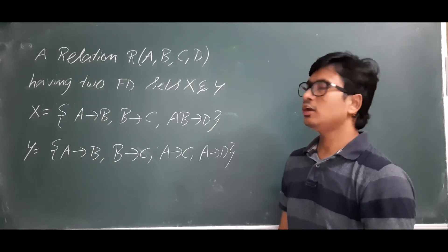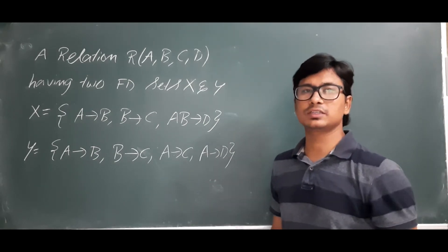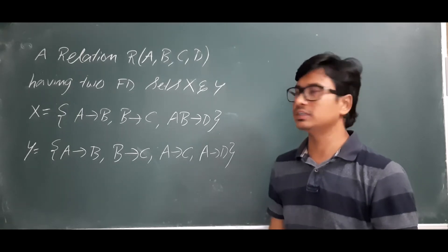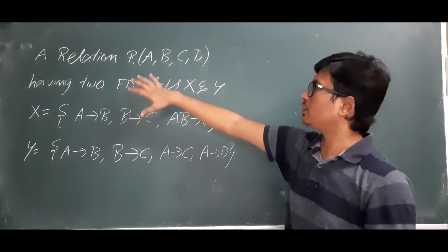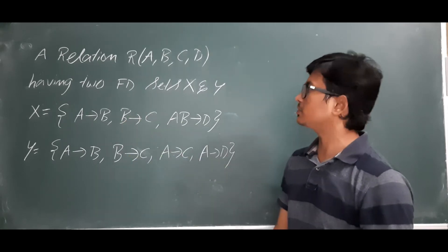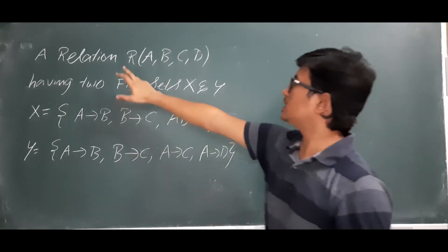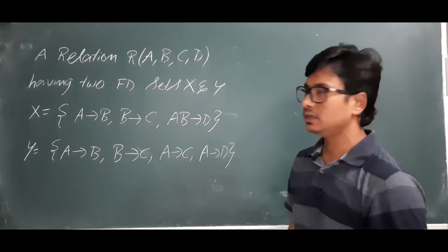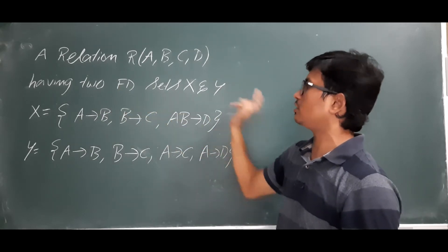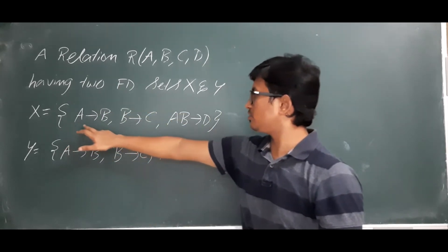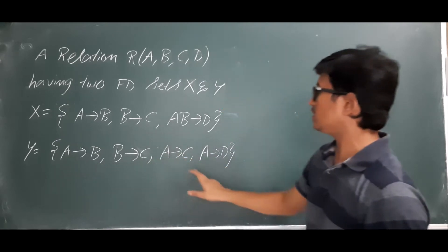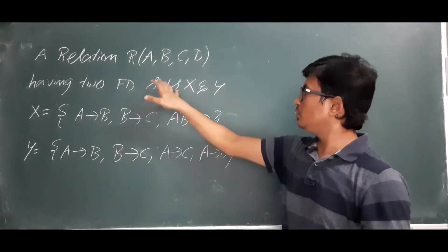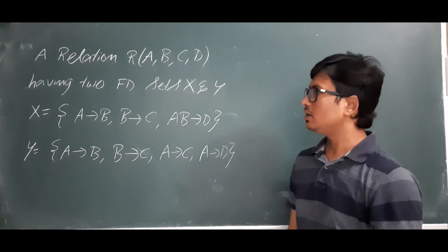Good morning students. In the last video we discussed how to check two FD sets and what rules we need to follow. Now for better understanding I have taken one example. A relation R consists of attributes A, B, C, D and having two FD sets X and Y. We need to check whether the two FD sets X and Y are equal or not.